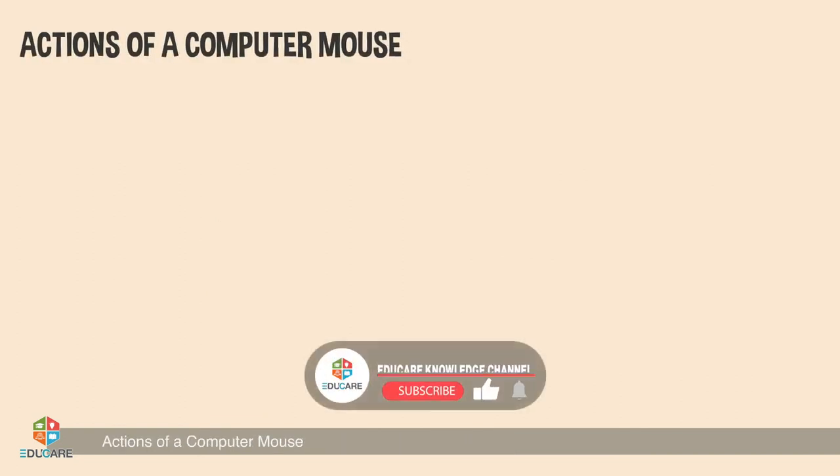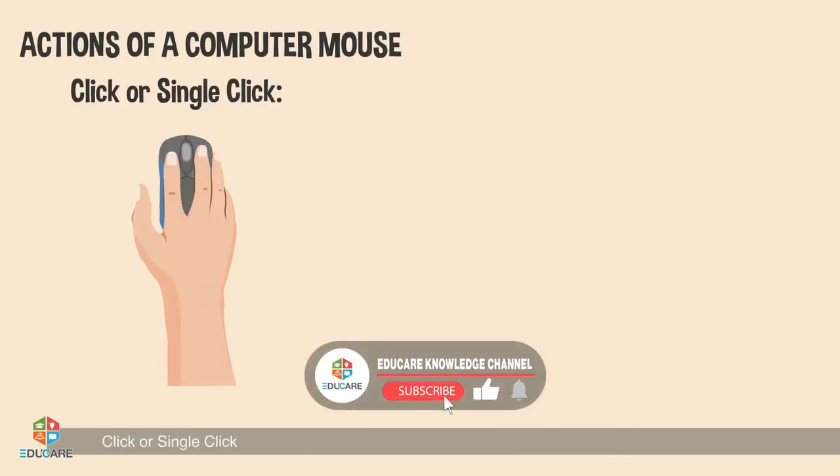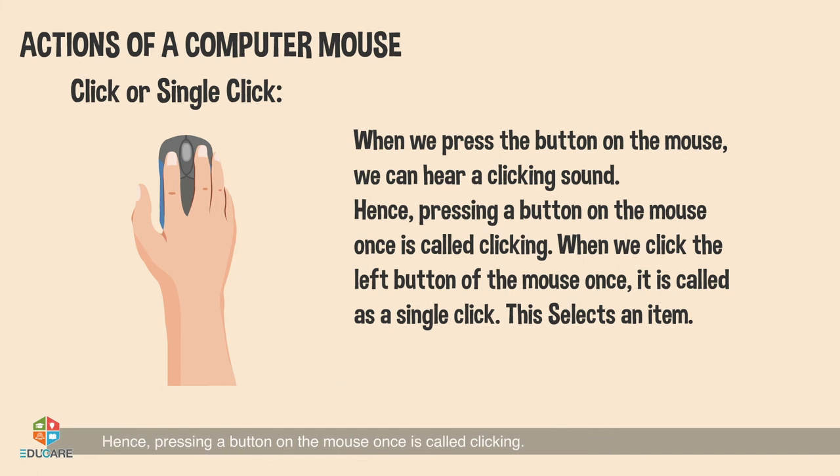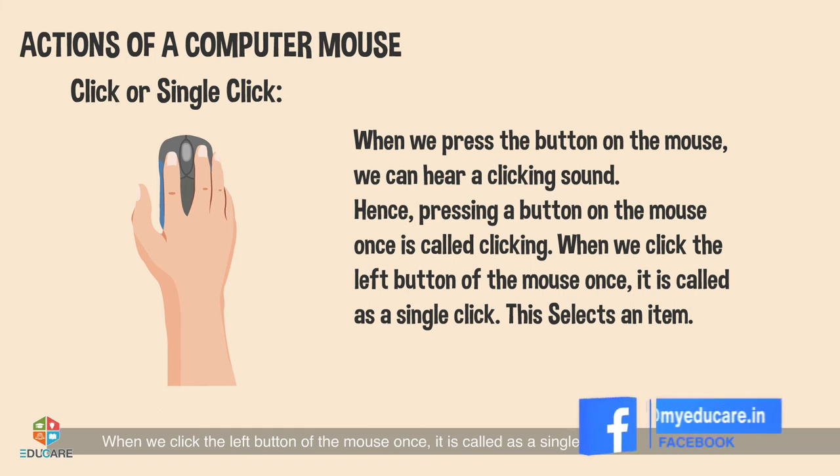Actions of a computer mouse: Click or single click. When we press the buttons on the mouse, we can hear a clicking sound. Hence, pressing a button on the mouse once is called clicking. When we click the left button of the mouse once, it is called a single click. This selects an item.